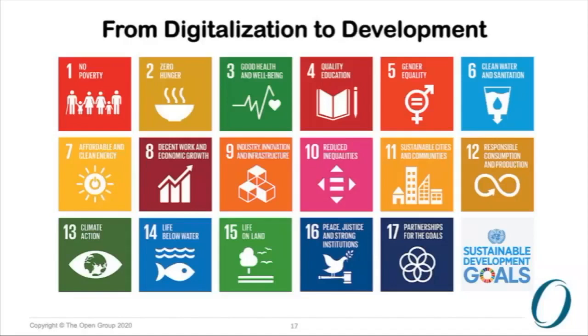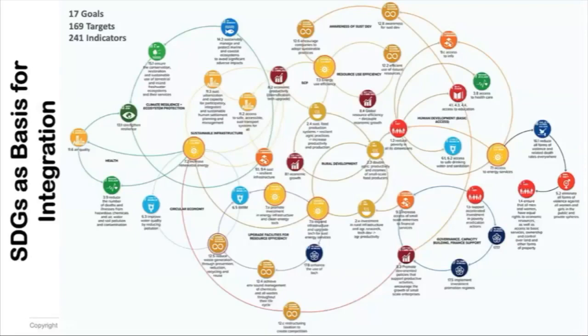The 17 goals look very independent of each other, but actually they are not. The next slide shows the relationships between these goals. For instance, if people are in poverty, you cannot provide education. You can see the numbers: 17 goals, 169 targets, and 241 indicators. Many of these goals are actually connected to one another — and this interconnected view is quite different from viewing them as independent boxes.